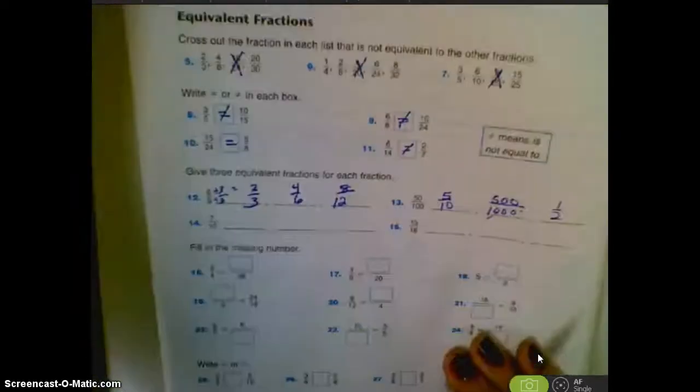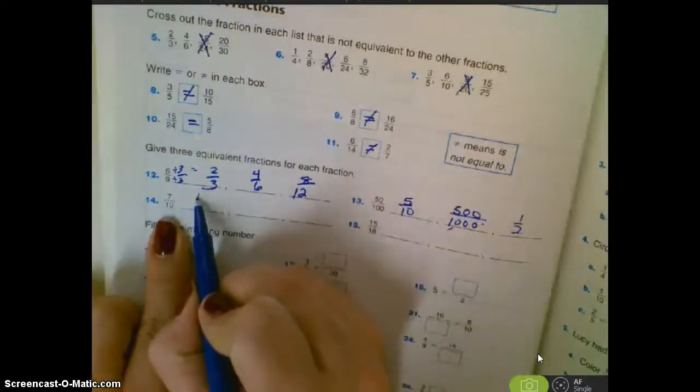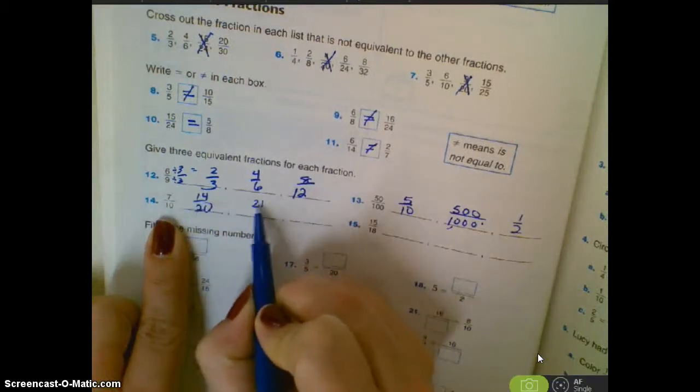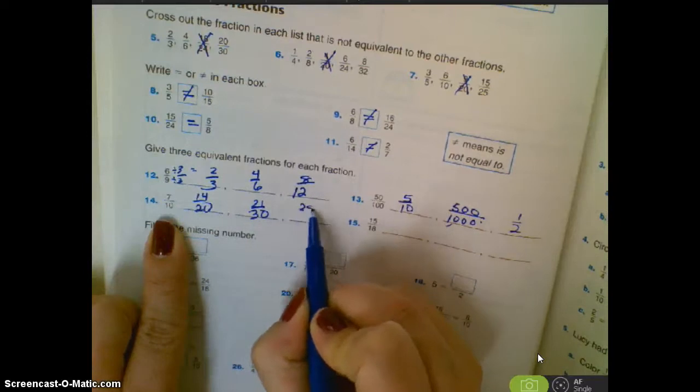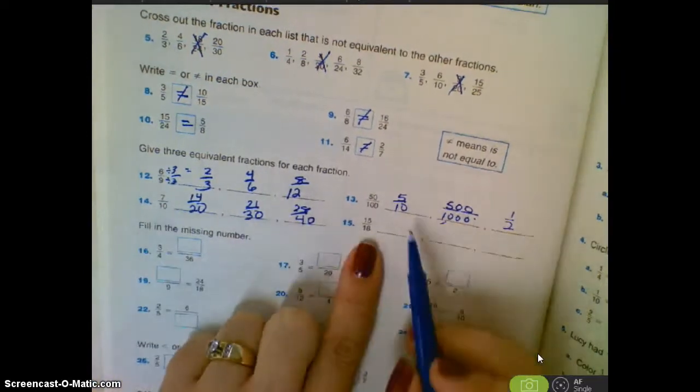I could multiply them both by two and get fourteen-twentieths. Multiply them both by three and get twenty-one-thirtieths. Multiply them both by four and get twenty-eight-fortieths. And again, yours don't have to be exactly the same.